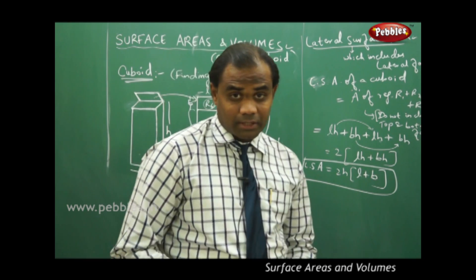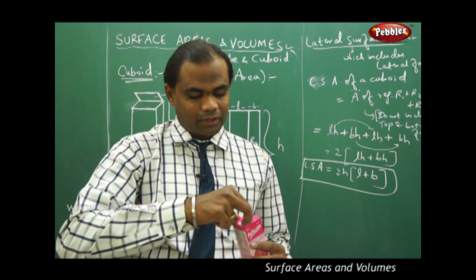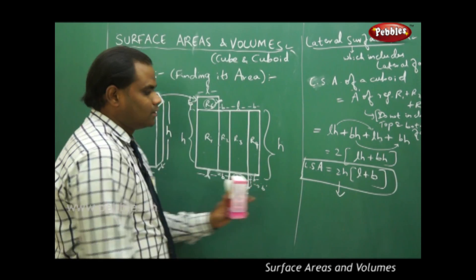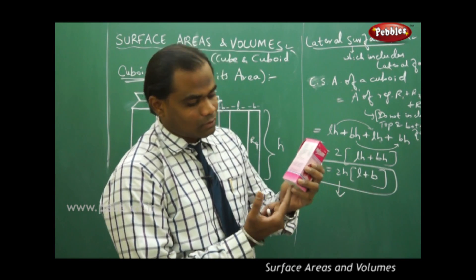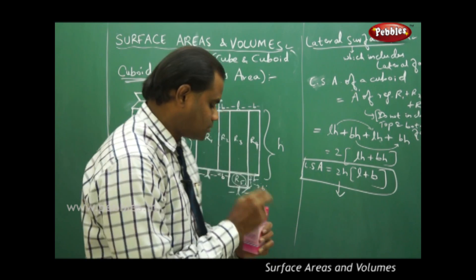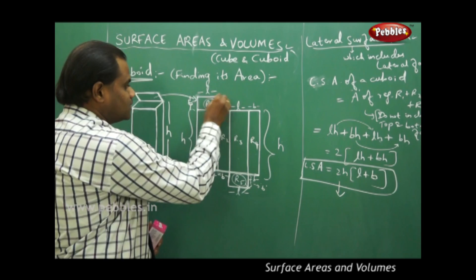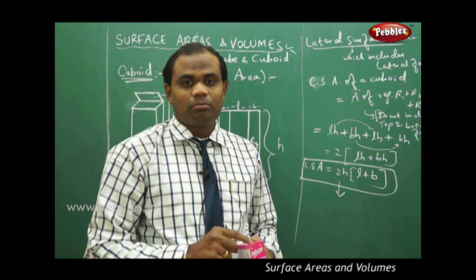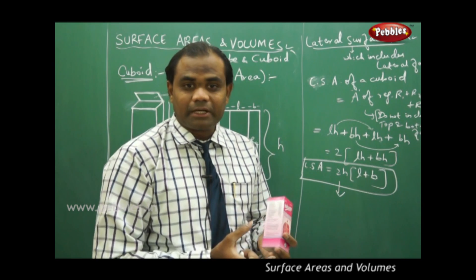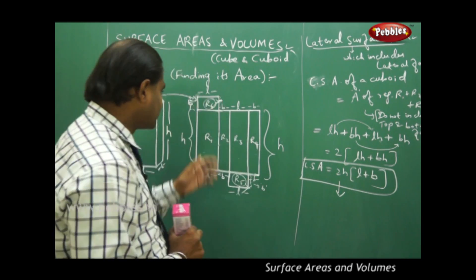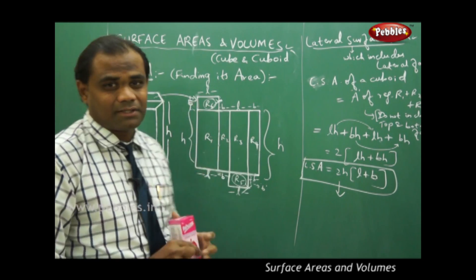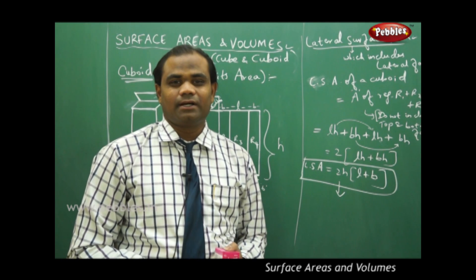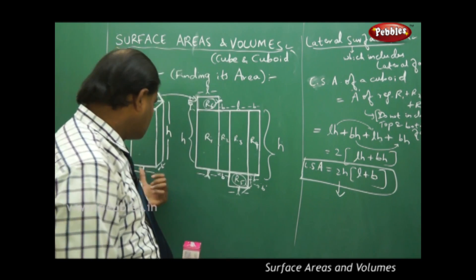Sometimes a question may ask for the surface area of a cuboid where the top is open. In that case, we add region R5 to the lateral surface area to include the bottom. If we want the total surface area, we also include the top face R6. Depending on the question — whether it is an open box, one-sided, or completely closed — we find the area accordingly by dividing into regions and summing them to get the surface area for given dimensions L, B, and H.